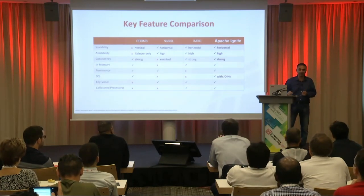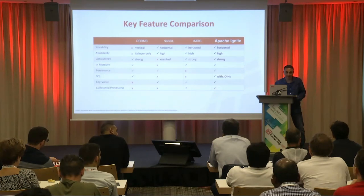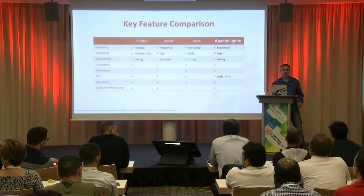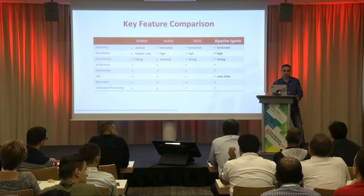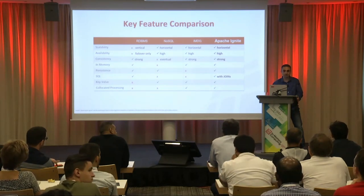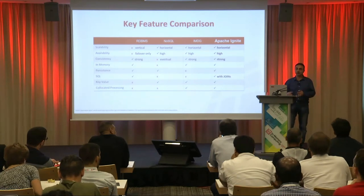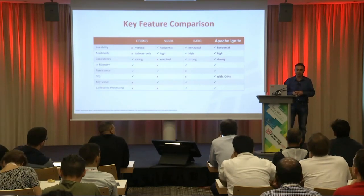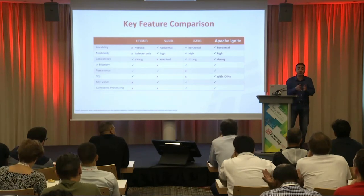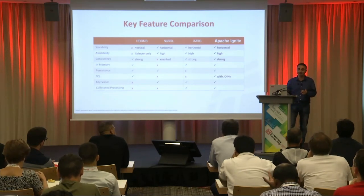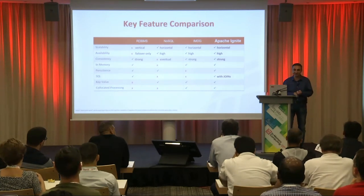On off-heap as default: yes, in Ignite 2.0 and later, off-heap is the default — you do not have to configure it. Off-heap is the default and you actually have to opt in to configure on-heap. In rare cases where you need to cache the off-heap data, you can enable on-heap storage.